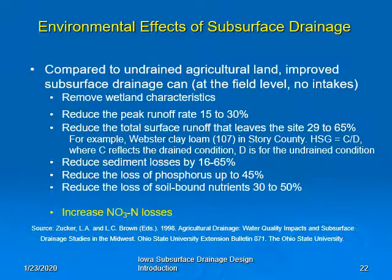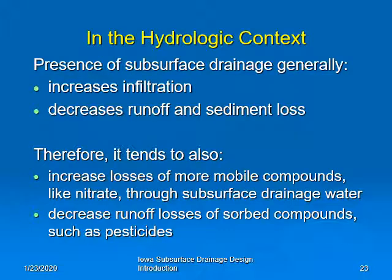However, there is one bad thing, and that's that it increases nitrate-nitrogen losses. To summarize in hydrologic terms, the presence of subsurface drainage will generally increase infiltration, which decreases runoff and sediment loss. Because of this, it tends to increase the losses of more mobile compounds like nitrates that flow with drainage water, while decreasing runoff losses of sorbed compounds such as pesticides and phosphorus.